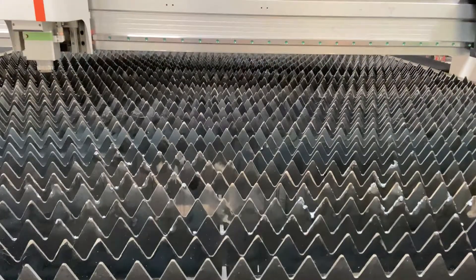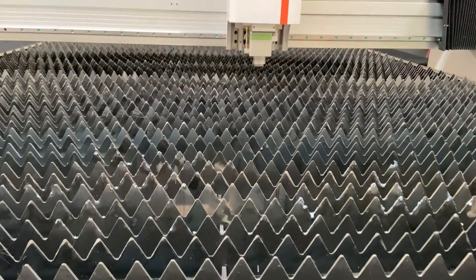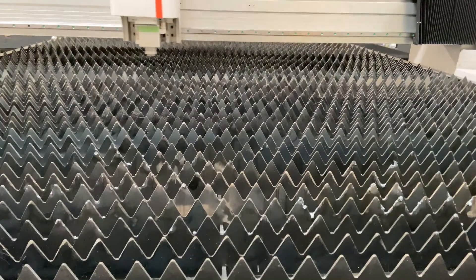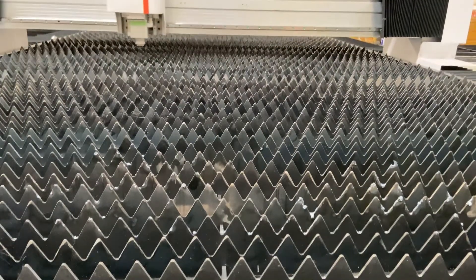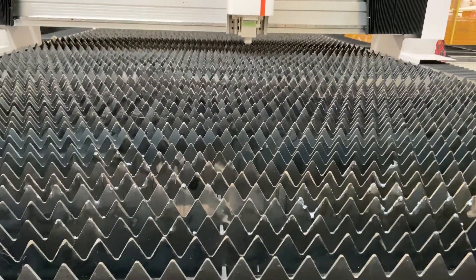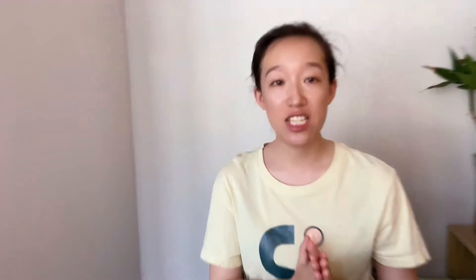When the machine is skewed due to mechanical impact or inconsistent friction treatment, the problem that may occur is that when cutting rectangular parts, the diagonal lines will be inconsistent.